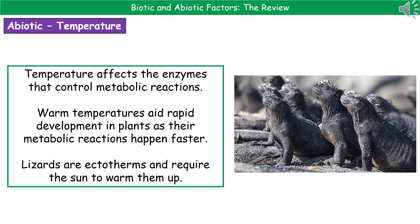In the animal kingdom, we see a slightly different effect because of warm-blooded and cold-blooded animals. Cold-blooded animals are called ectotherms; warm-blooded are endotherms. Lizards are a great example of ectotherms — first thing in the morning they bask in the sun to absorb warmth, which raises their body temperature so their enzymes and metabolic reactions speed up. This is vitally important for ectotherms. Endotherms are less affected because warm-blooded animals control their own body temperature.